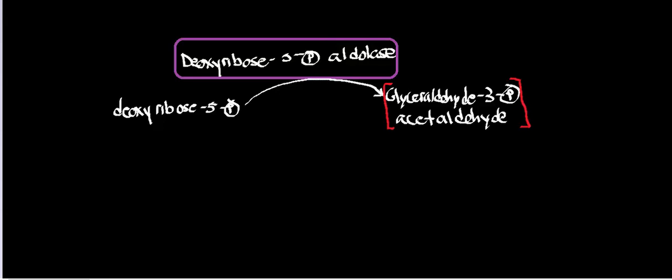Welcome back to Nucleotide Catabolism — more specifically, this playlist is dedicated to purine catabolism, although you'll also find this video in pyrimidine catabolism. In the last video, we saw that we could generate deoxyribose 1-phosphate, and then through a reaction called phosphodeoxyribomutase — which is also the same enzyme as phosphoglucomutase — we could essentially transfer the phosphate group from the 1-position to the 5-position, giving us deoxyribose 5-phosphate.